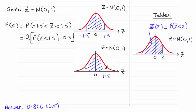So from tables, if you look up the probability of being less than 1.5, got 1.50 here, it's 0.9332.